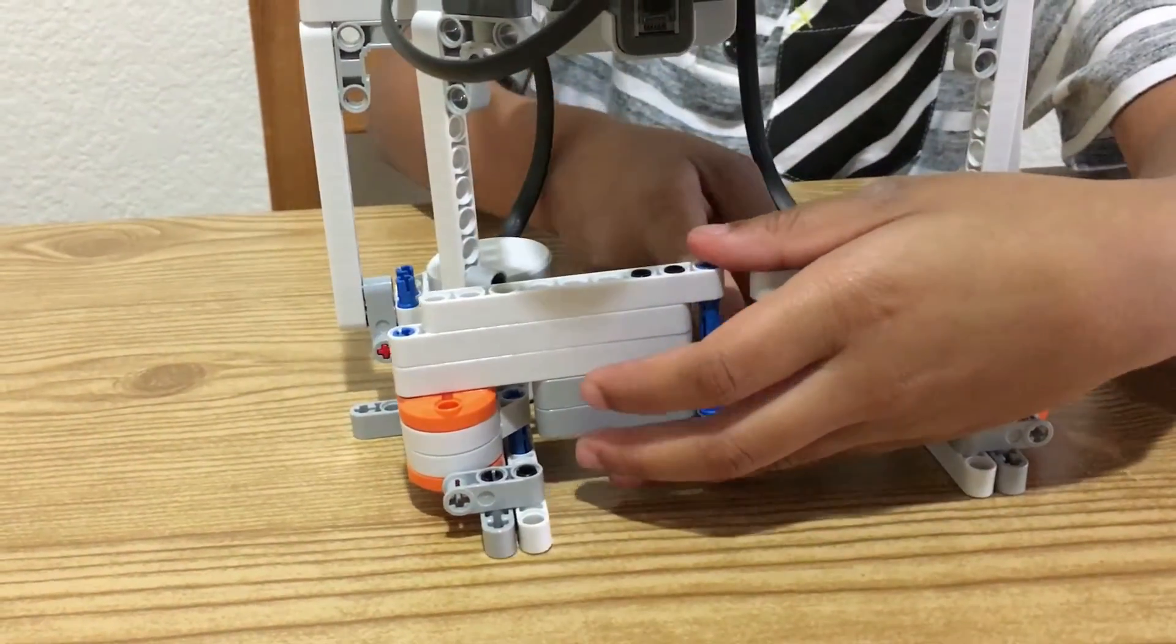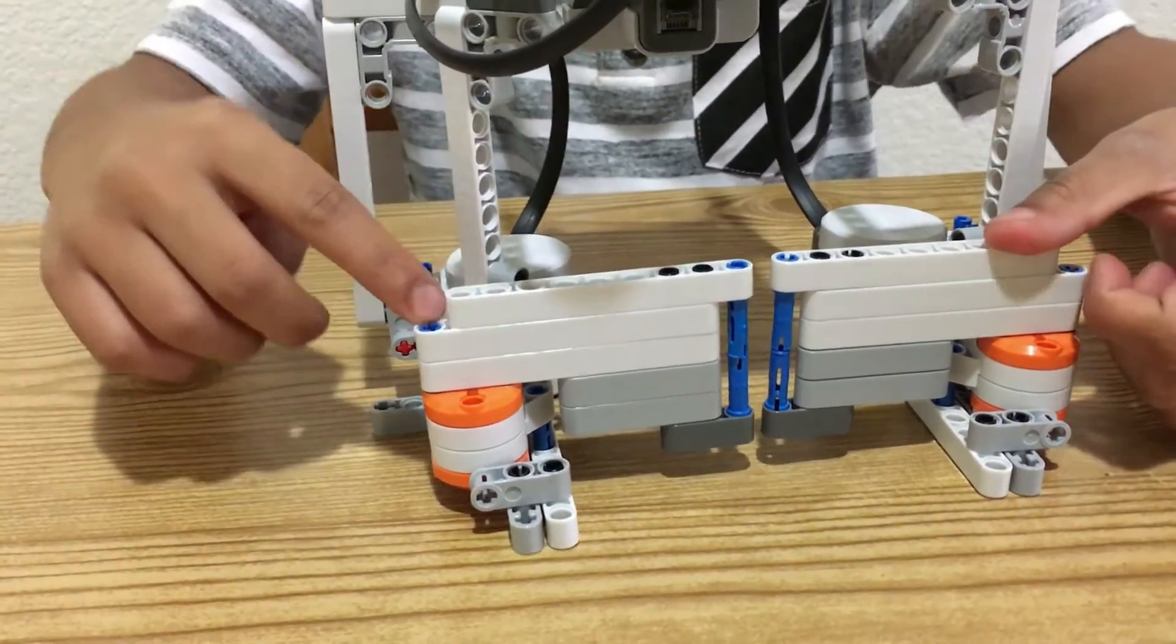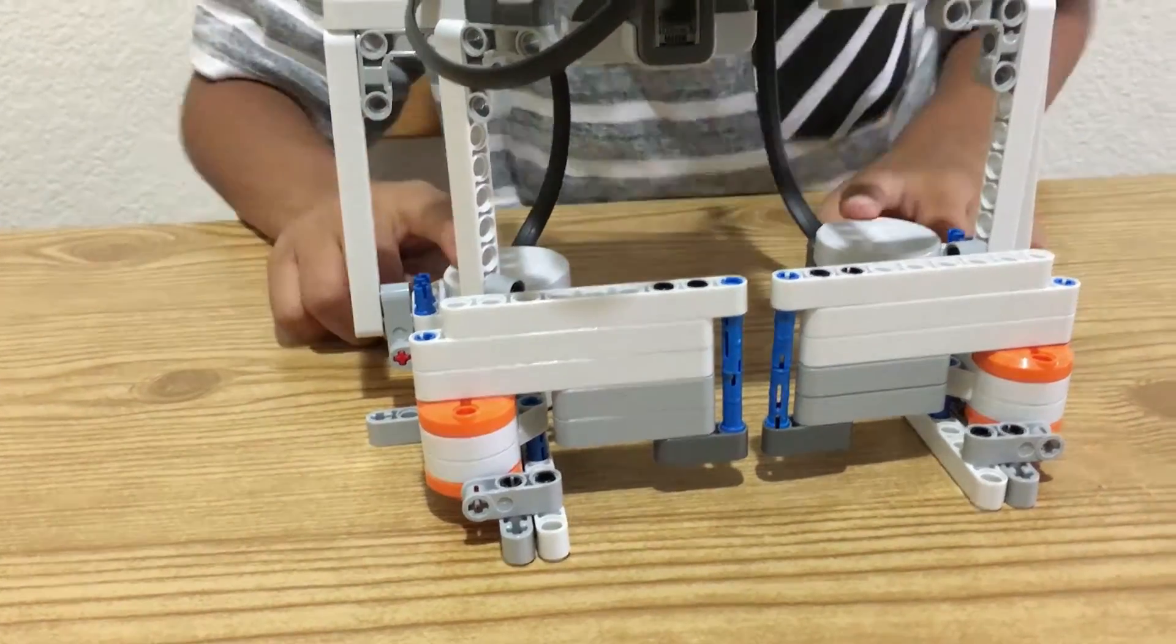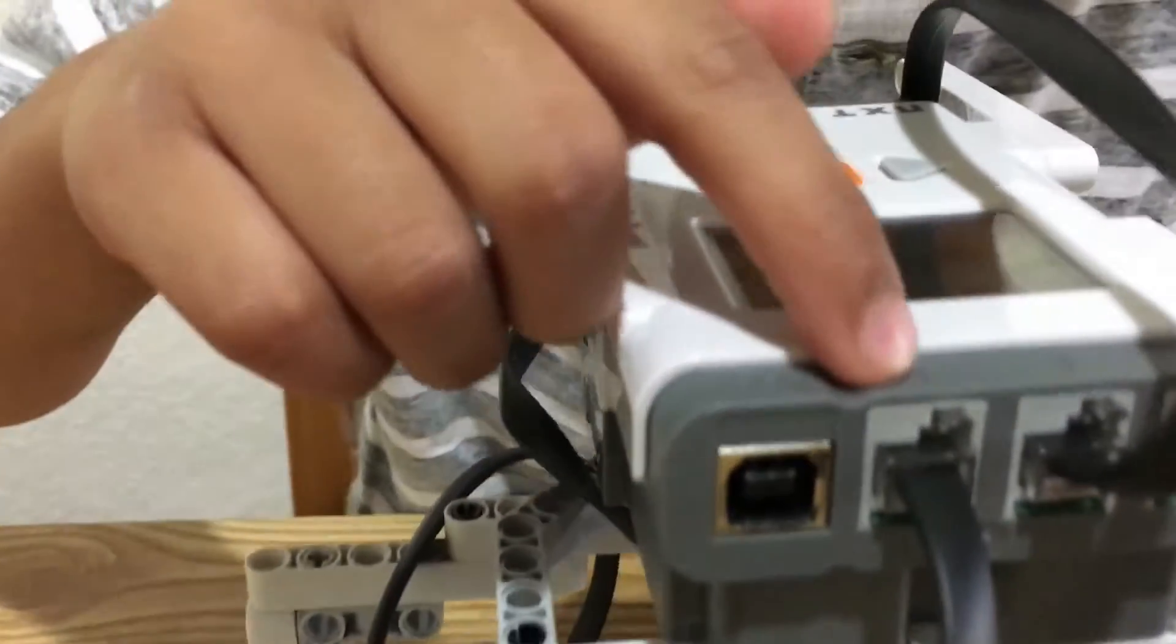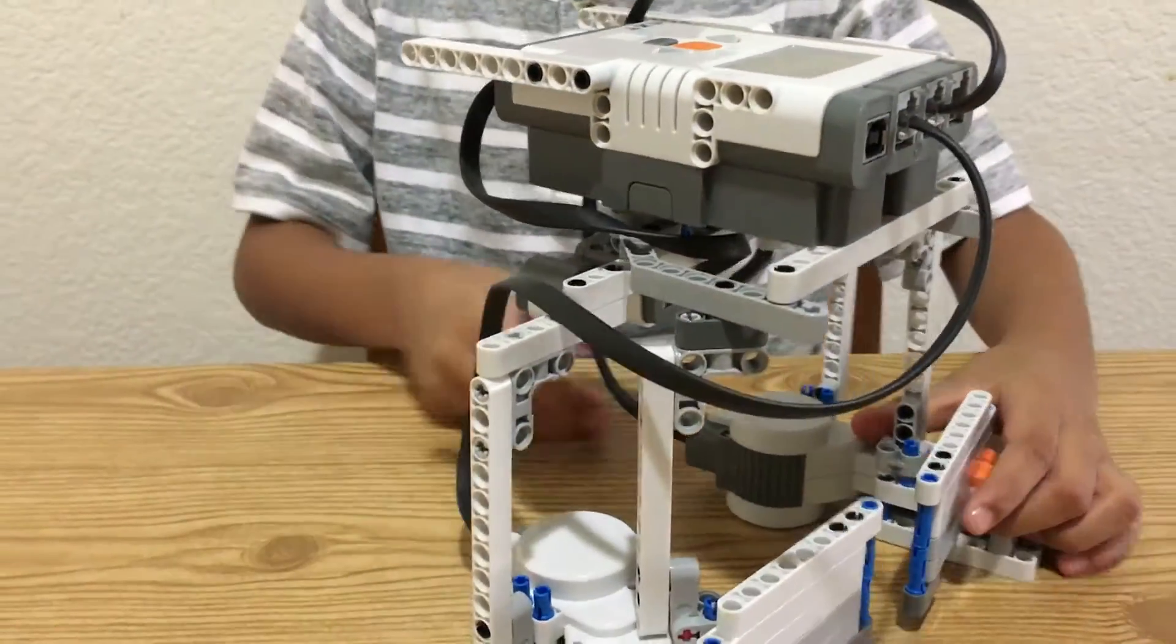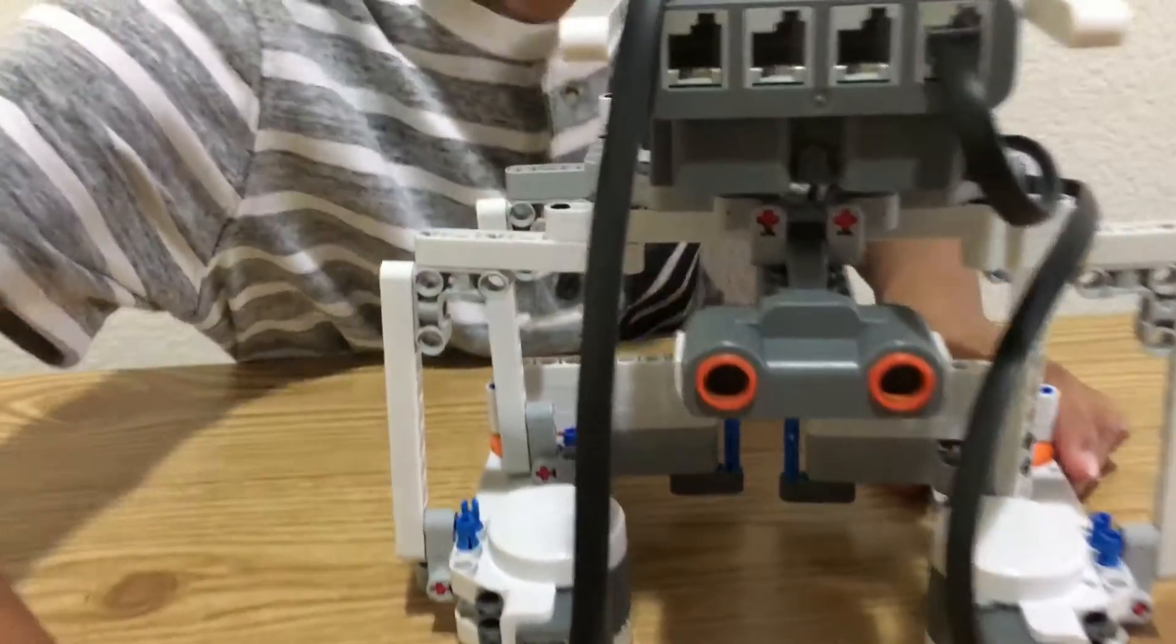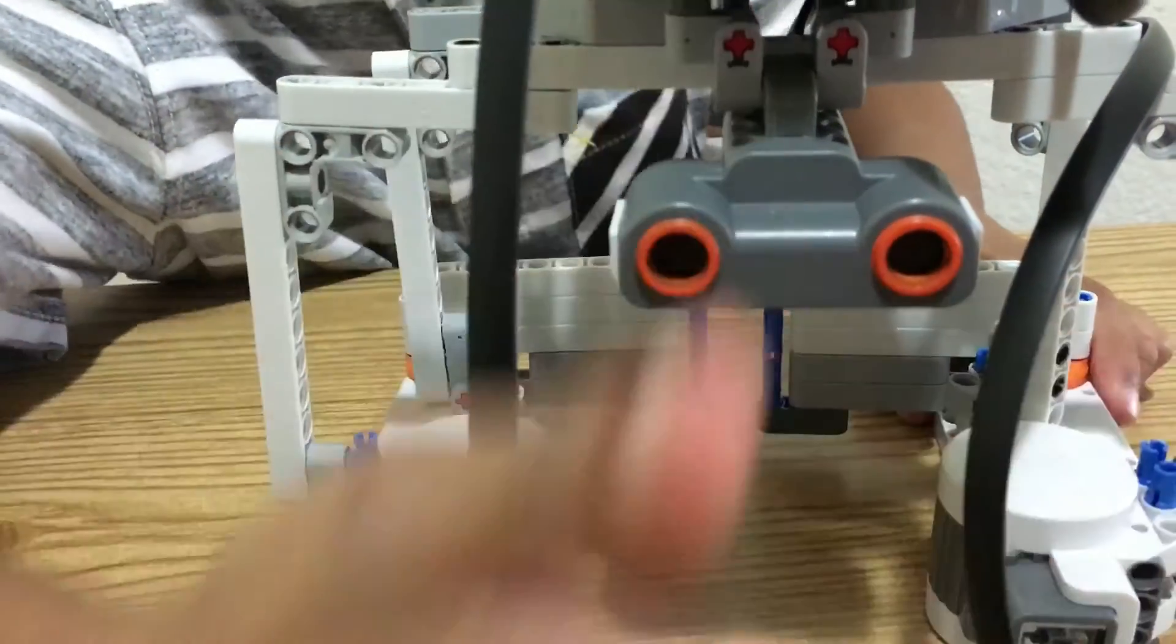I added handles on it and here the two motors will control the gate and they attach to port B and C. Here I'll look at the sides and this is the ultrasonic sensor. When it senses something coming near